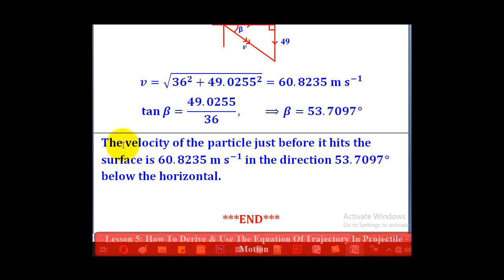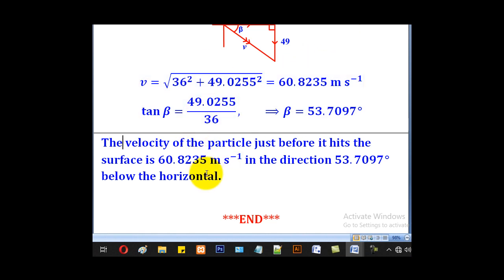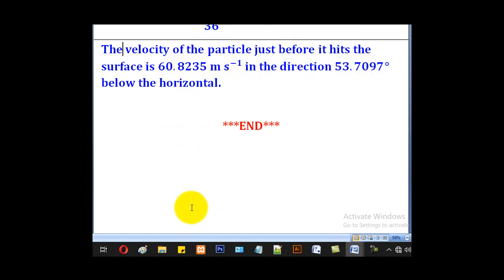So therefore, the velocity of the particle just before it hits the surface is 60.8235 meters per second in the direction 53.7097 degrees below the horizontal. That brings us to the end of our lesson.